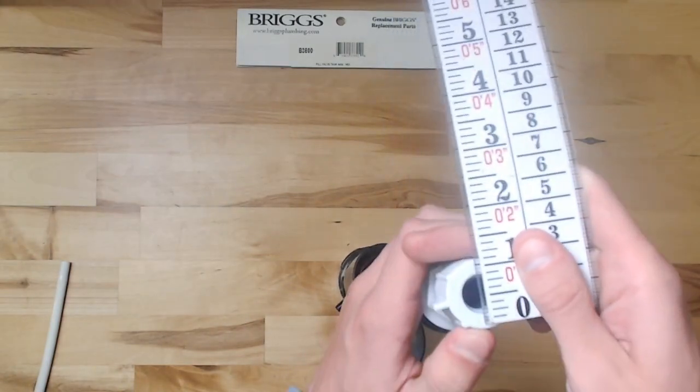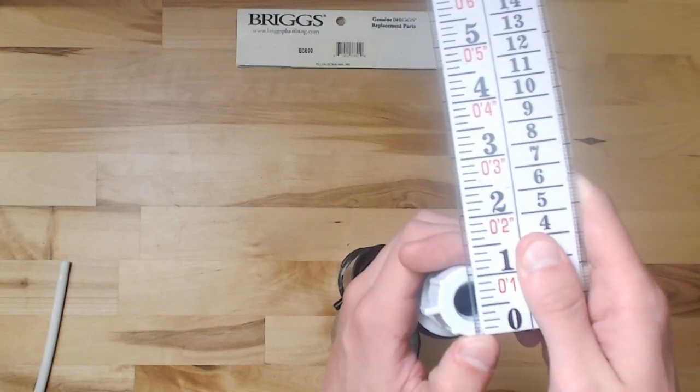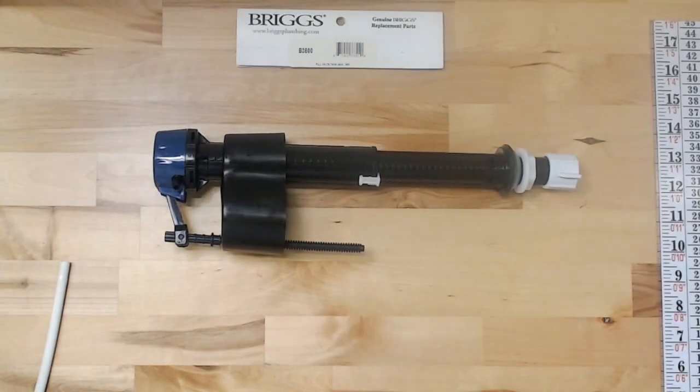And then an inch or a little over an inch for the supply line nut. Once again, this is the genuine Briggs B3800 fill valve.